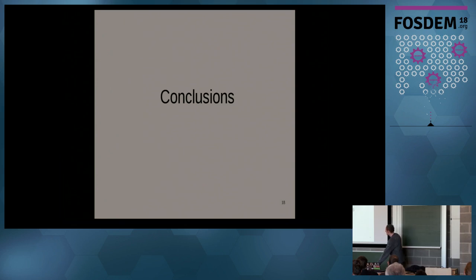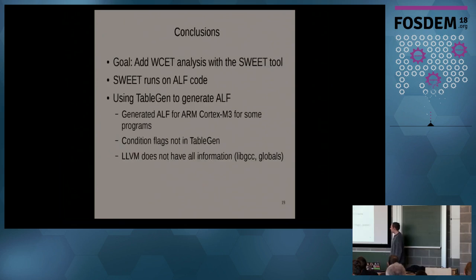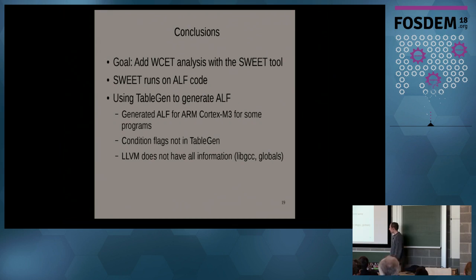To conclude: I tried to add worst-case execution time analysis to LLVM using the SWEET tool. For this I needed to output ALF code semantically identical to the instructions being compiled, from LLVM. I used TableGen for this — to generate code that you can use in your backend. I managed to get it working for the Cortex-M3 for programs that don't involve floating-point calculations. I found that I needed to know the conditional flags — negative, zero, carry, overflow — and these are not in TableGen because the compiler doesn't care about them. Bottom line: LLVM does not have all the information required to do this for general non-trivial code, because parts of the functions are in libGCC.